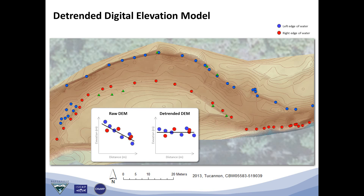The first thing that the River Bathymetry Toolkit does is to detrend the digital elevation model. It does this by fitting a relationship through the loss of elevation as you move downstream through the DEM. It then flattens out the channel to produce an artificially flat channel, but maintains the high-frequency elevation features. The result is essentially the same elevation intensity upstream and downstream — a flattened channel.